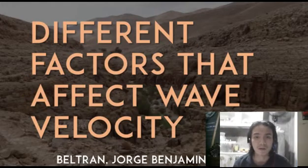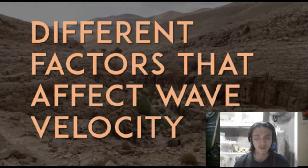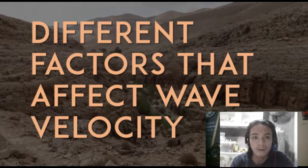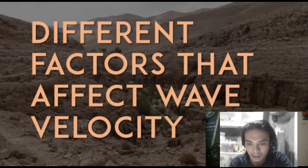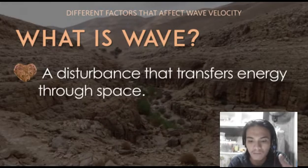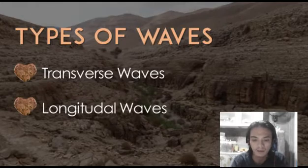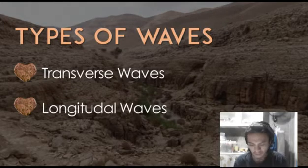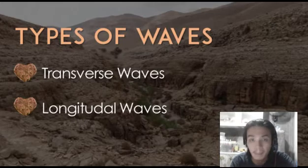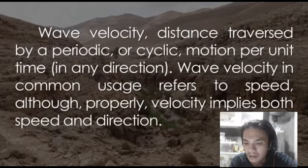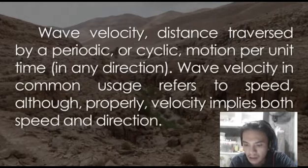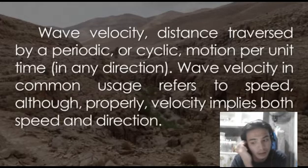Good morning. My name is George Benjamin Beltran and my report is about the different factors that affect wave velocity. First, what is a wave? A wave is a disturbance that transfers energy through space. There are two types of waves: transverse waves and longitudinal waves. Wave velocity is the distance traversed by a periodic or cyclic motion per unit time, in any direction.